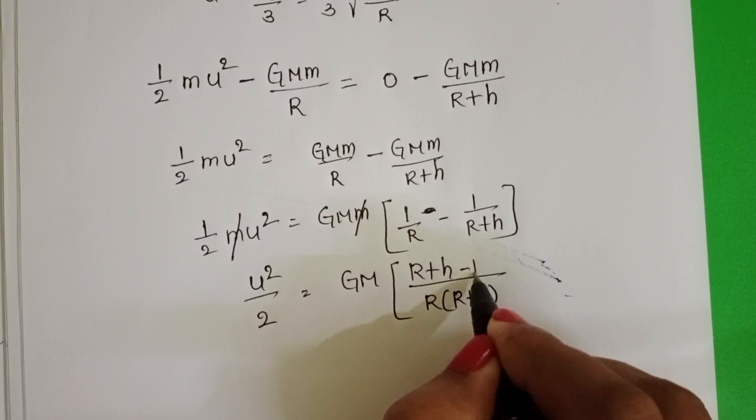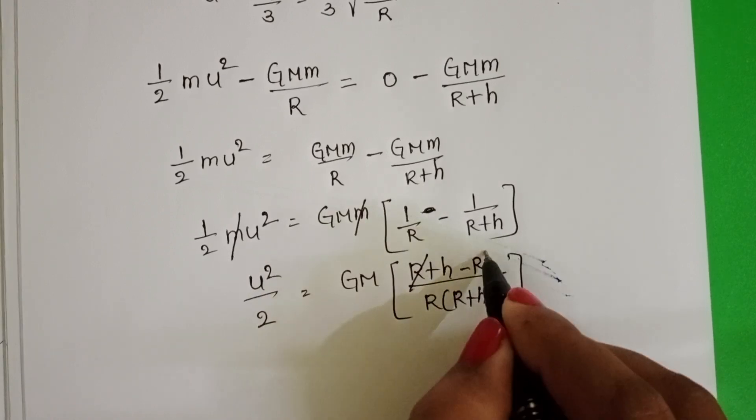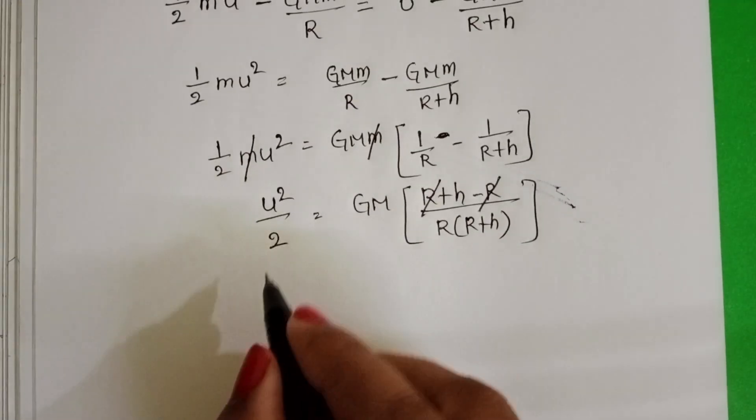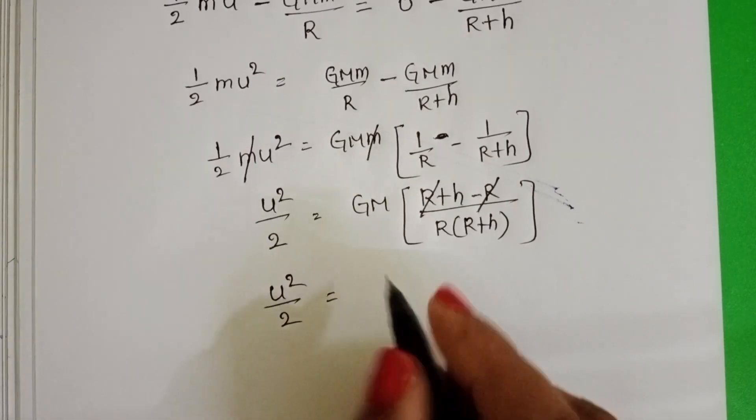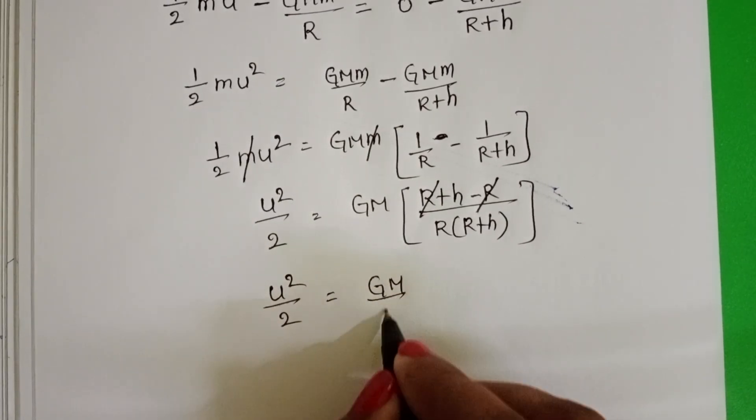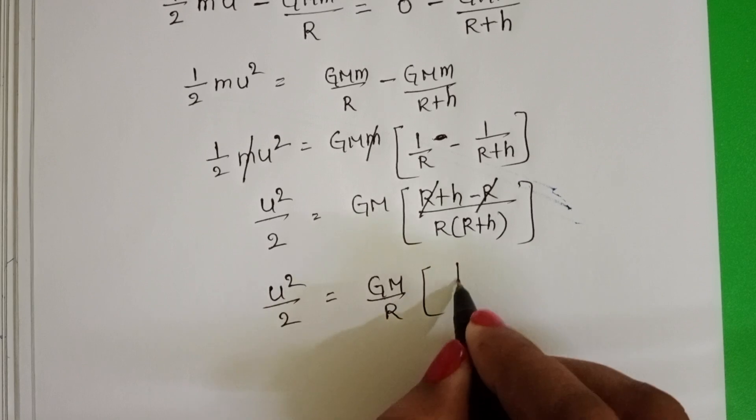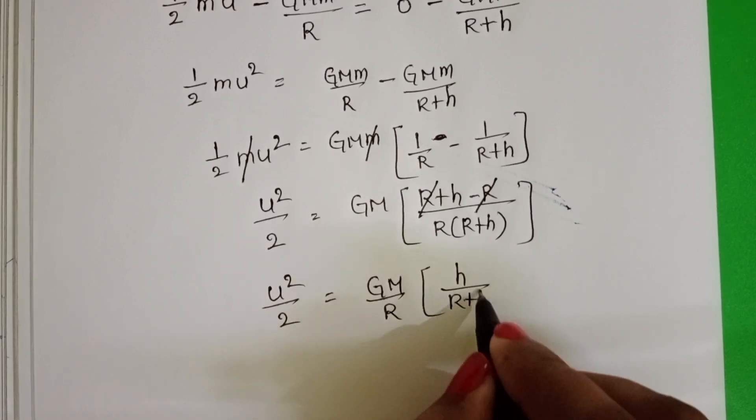R minus R get cancelled. u square by 2 equals GM by R into h by R plus h.